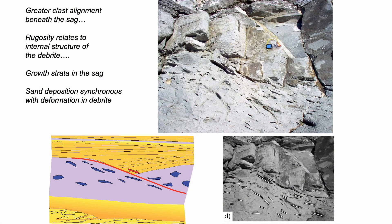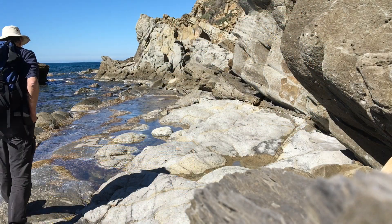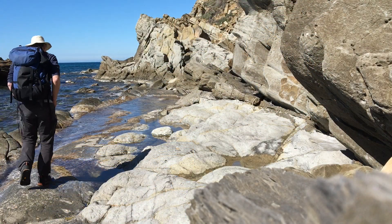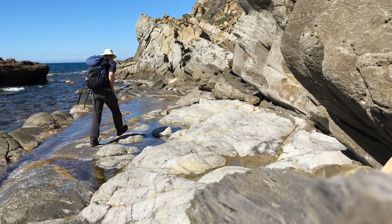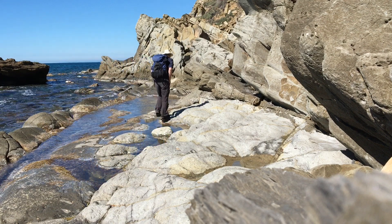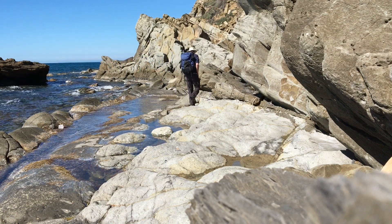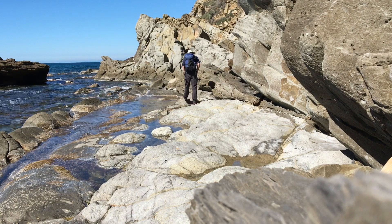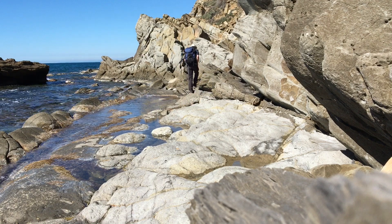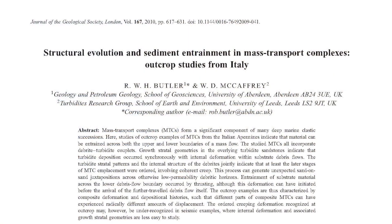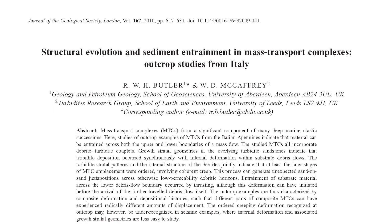So this is evidence for a creeping, slowly collapsing seabed. We've seen how we can use some simple concepts and structures to understand these creeping processes. You can find out more about the San Leonardo debrite, and others like it, in this paper.